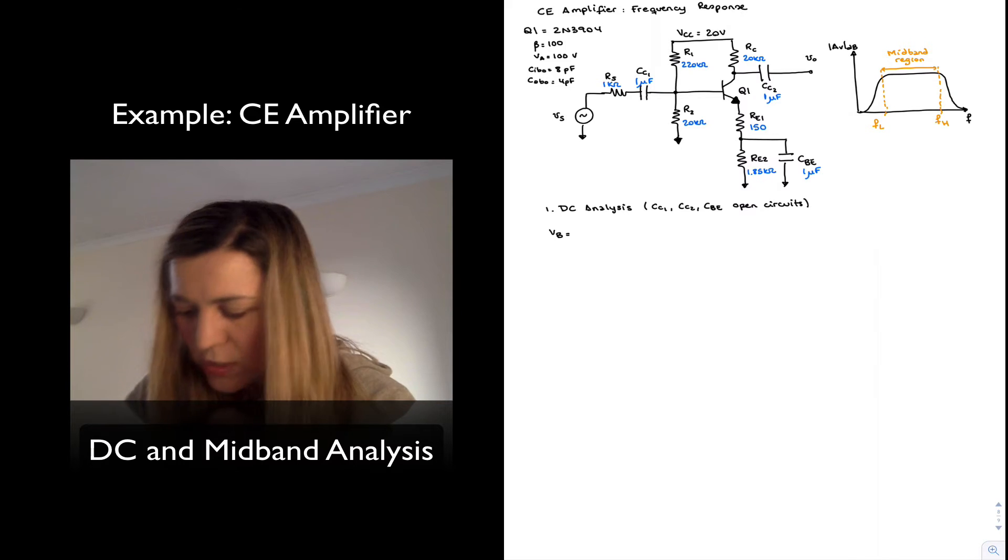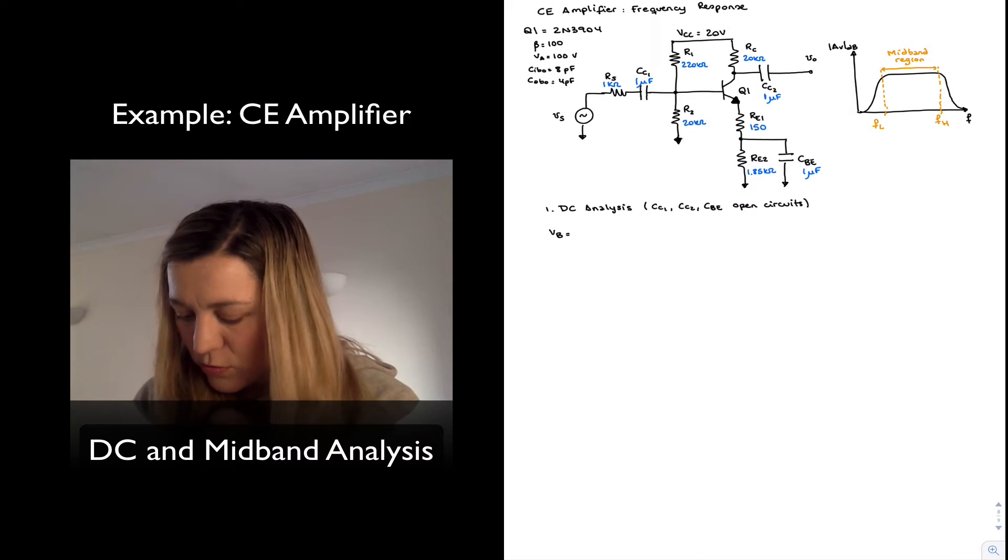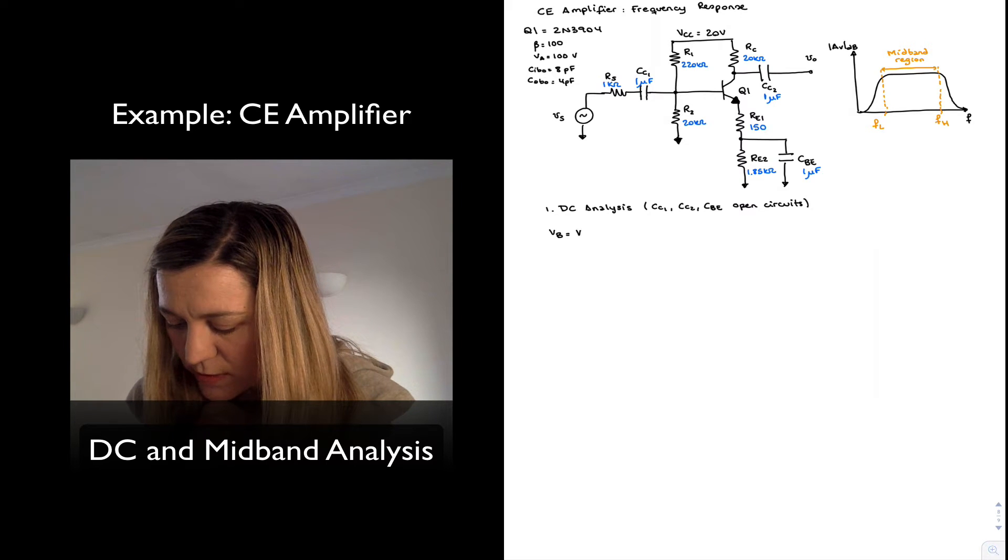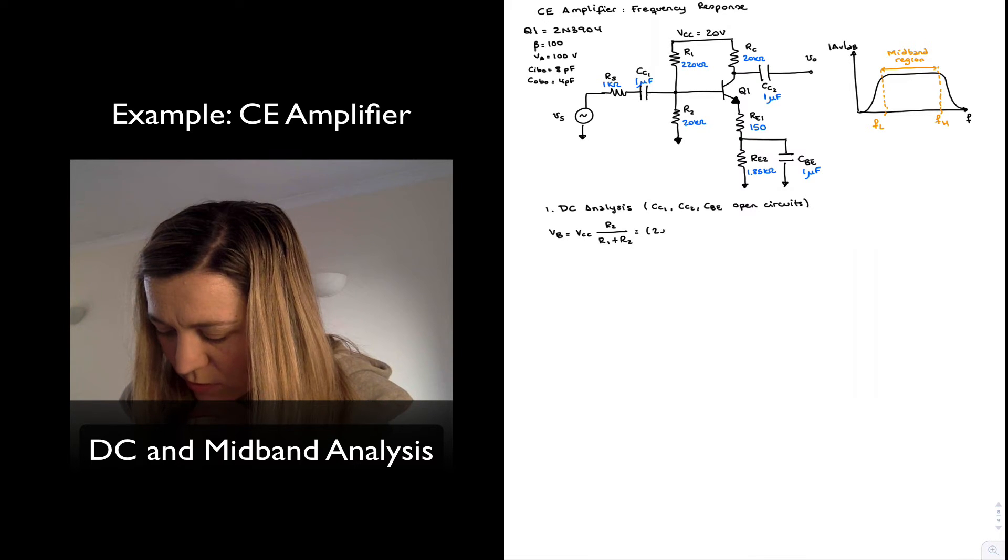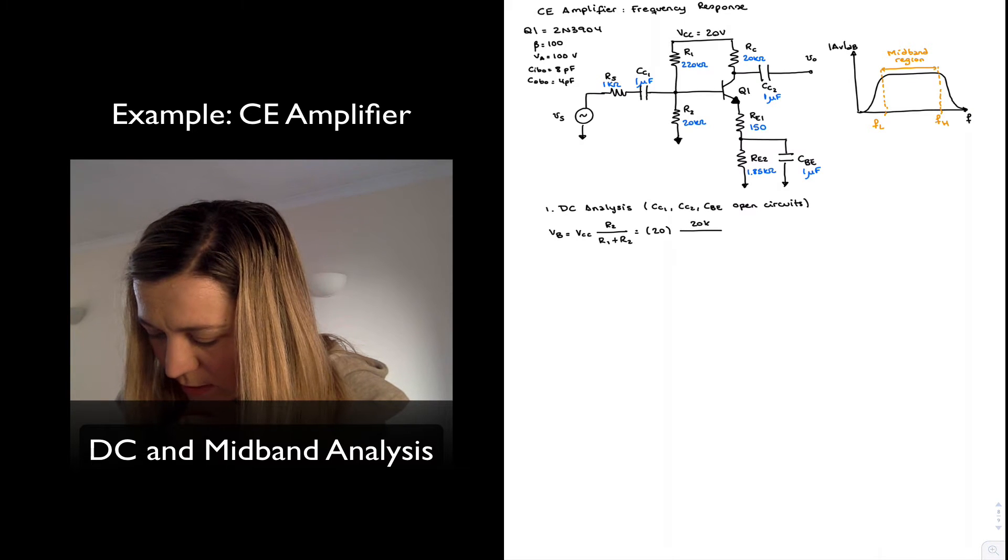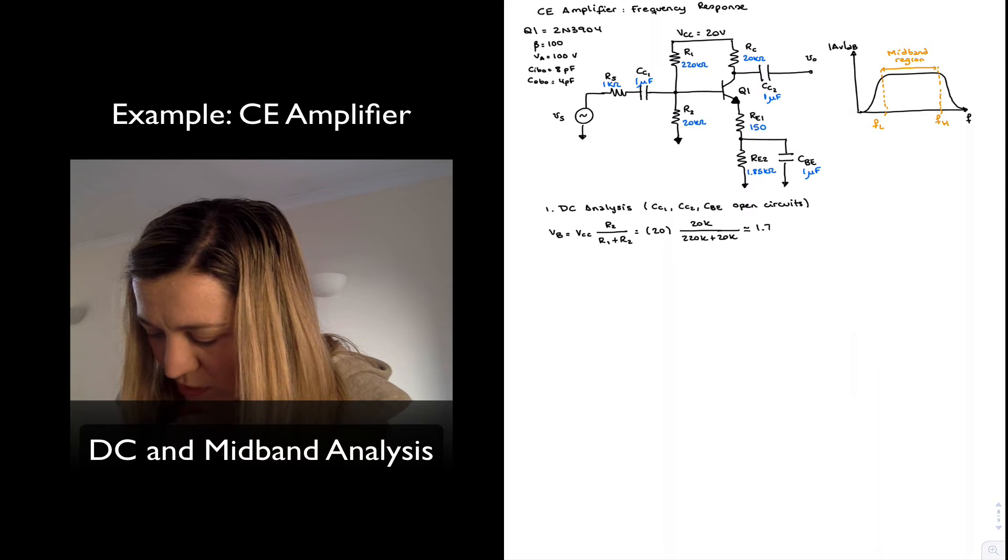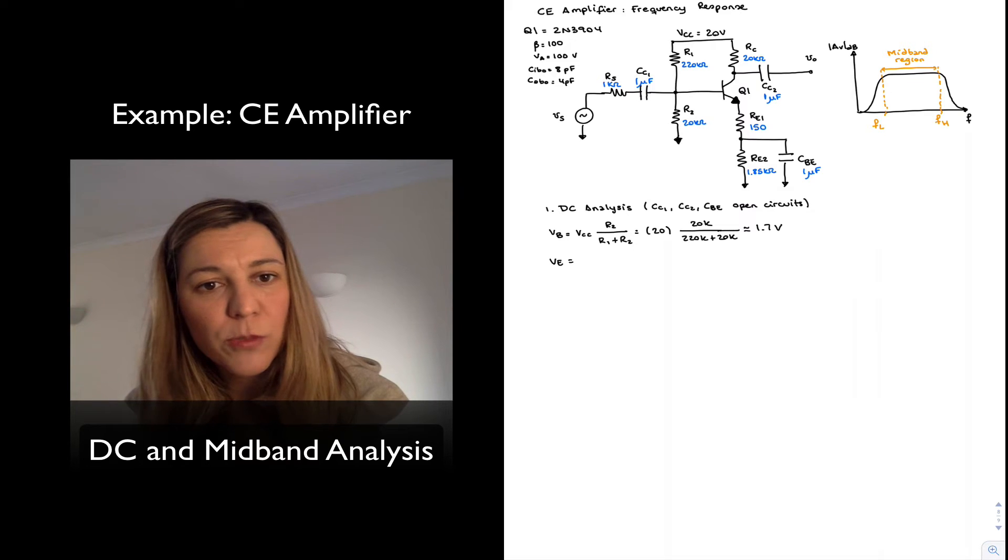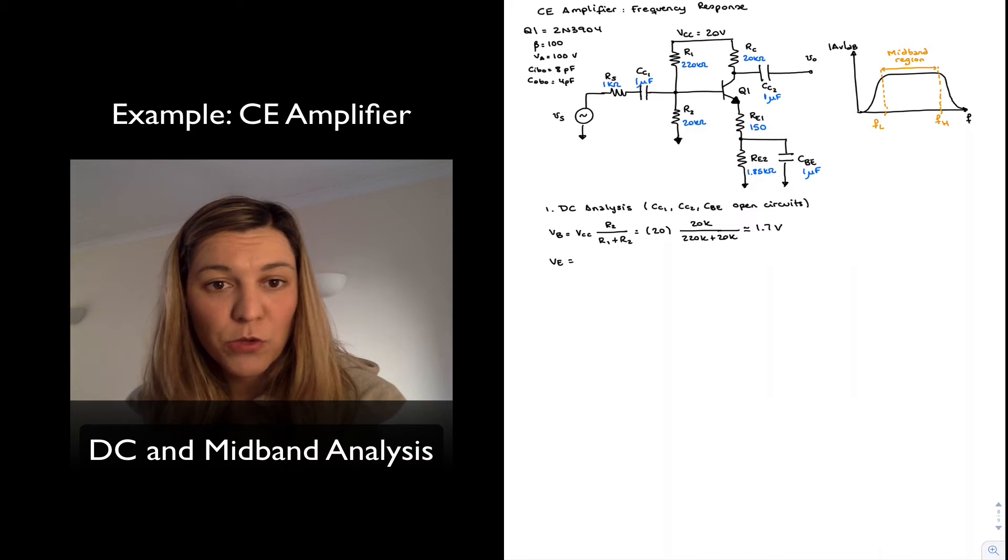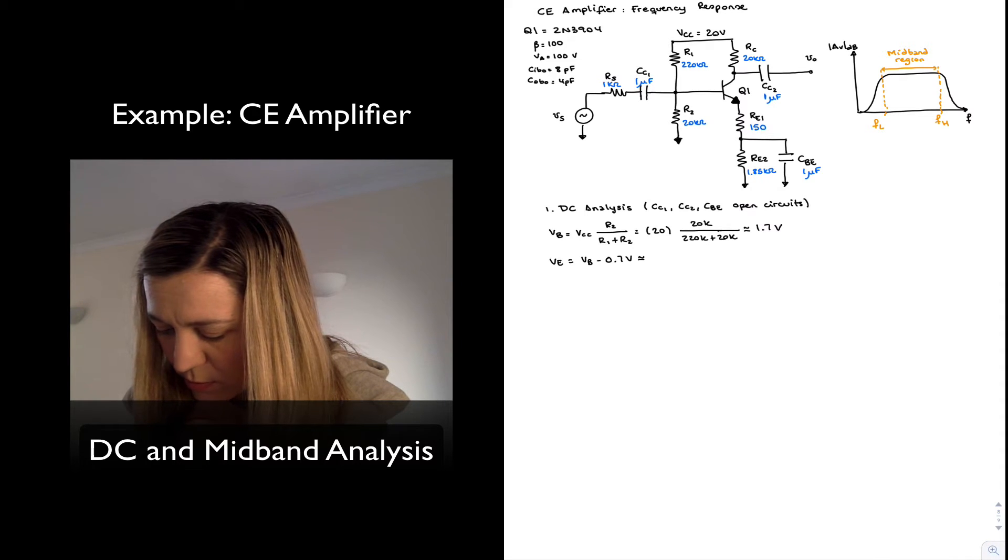First thing I can see that my base voltage is the result of a voltage division between R1 and R2. And so it's going to be equal to VCC times R2 divided by R1 plus R2. This is 20V times 20K divided by 220K plus 20K, which is approximately 1.7V. The voltage at the emitter is going to be 0.7V below that, since we have a diode drop between base and emitter. So VE is VB minus 0.7V, approximately 1V.